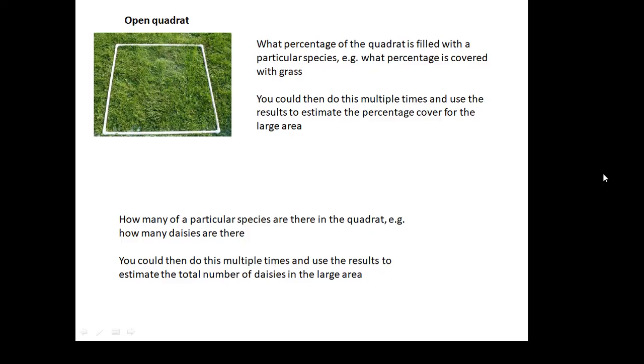How many of a particular species there are in the quadrat. For example, you could count how many daisies there are in the quadrat. You do that 10 times and then you use your results to work out the total number of daisies in the field.